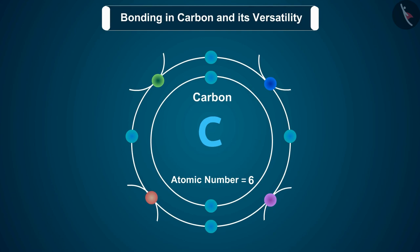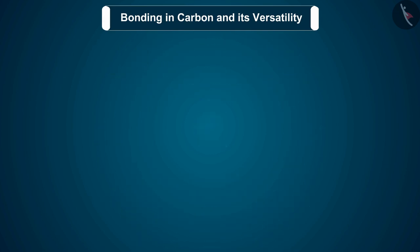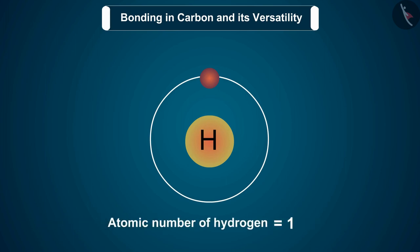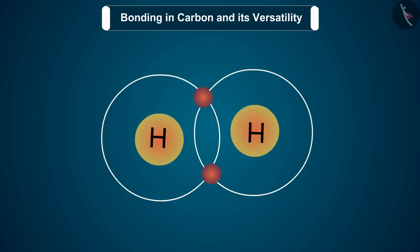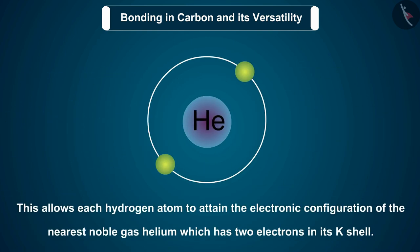The simplest molecule formed in this manner is that of hydrogen. As we have previously studied, the atomic number of hydrogen is one, hence hydrogen has one electron in its K shell and it requires one more electron to fill the K shell. So two hydrogen atoms share their electrons to form a molecule of hydrogen H2. This allows each hydrogen atom to attain the electronic configuration of the nearest noble gas helium, which has two electrons in its K shell.